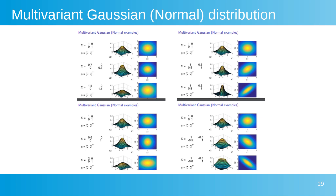The bottom-left quadrant shows the effect of changing diagonal values of the covariance matrix, similar to the top-left but with different values. The first graph is again a standard Gaussian with no correlation. Below, the variance in the X1 direction is reduced, resulting in an elliptical contour narrower along the X1 axis. In the third example, the variance in the X1 direction is increased, leading to an elliptical contour stretched along the X1 axis.